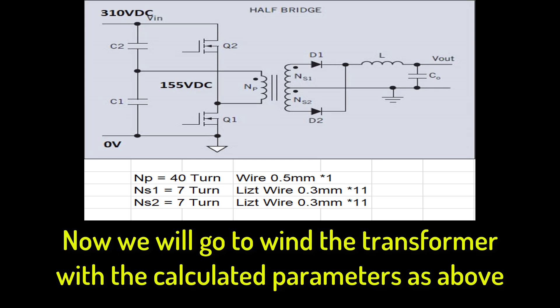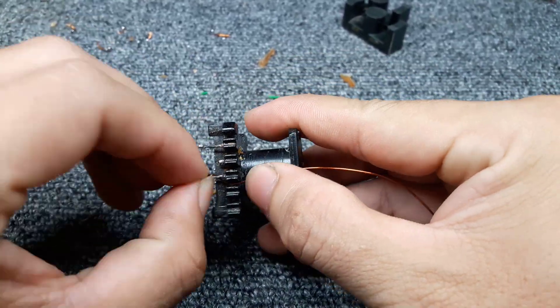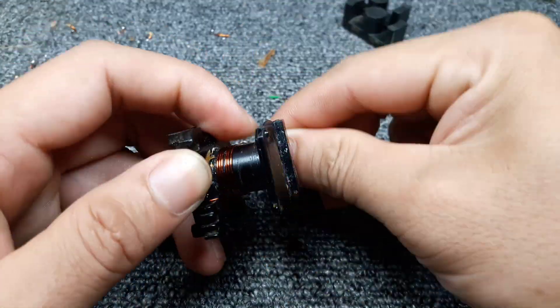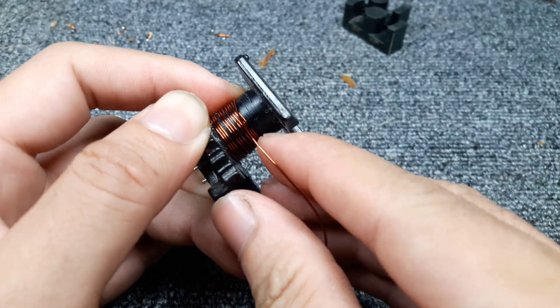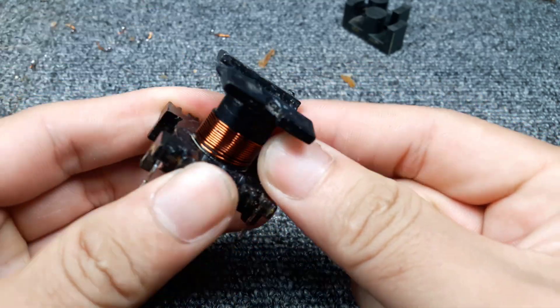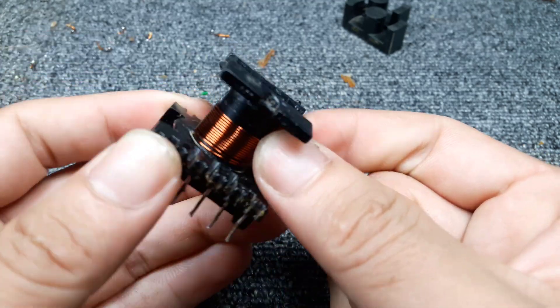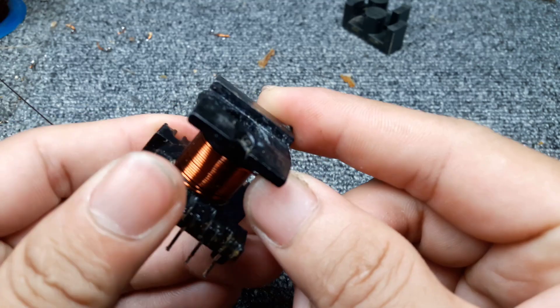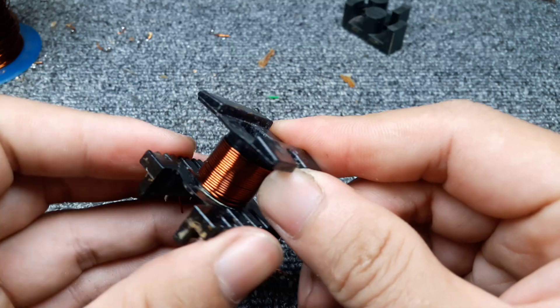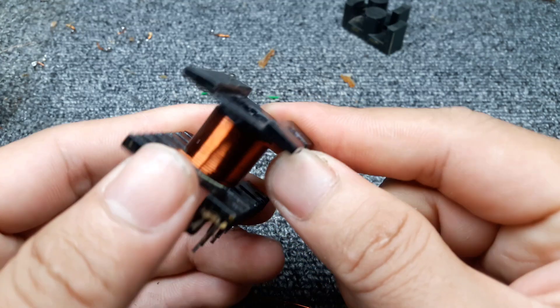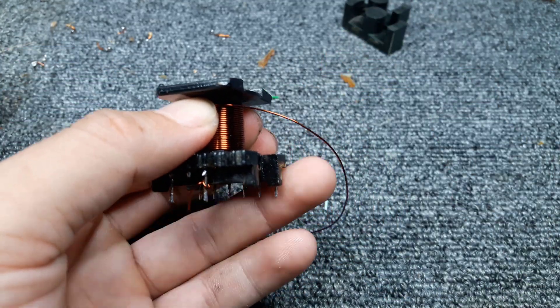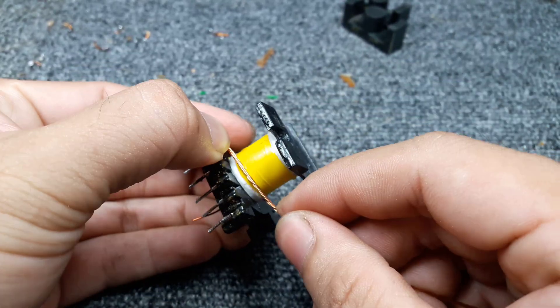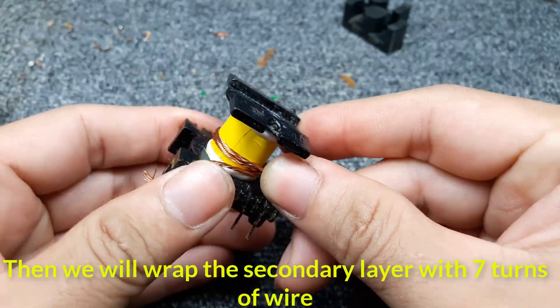The first is half the number of turns of the primary. I wound 20 turns of wire. Once done, we have to wrap one layer of insulation, then we will wrap the secondary layer with 7 turns of wire.